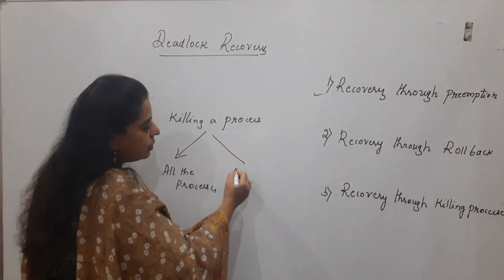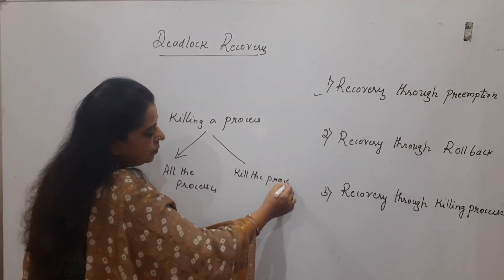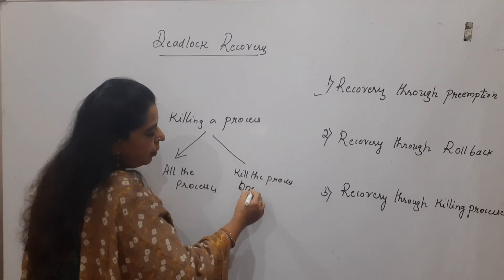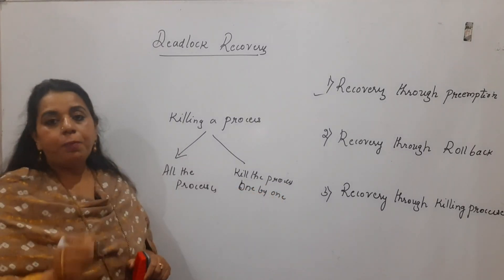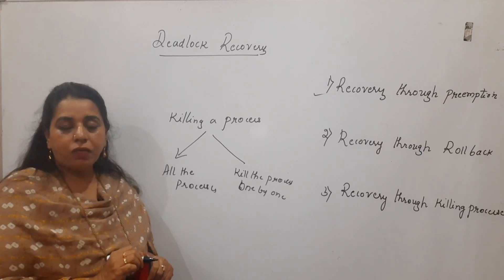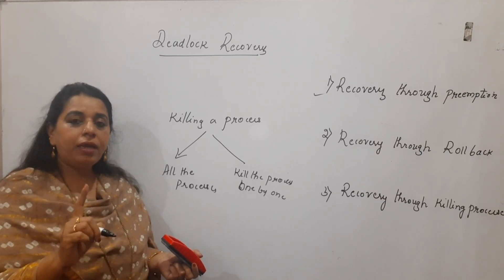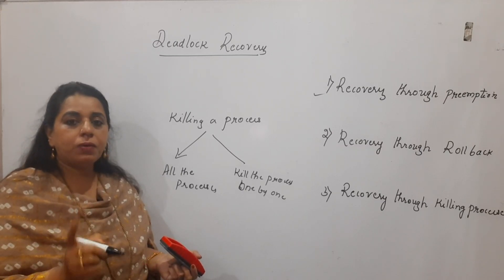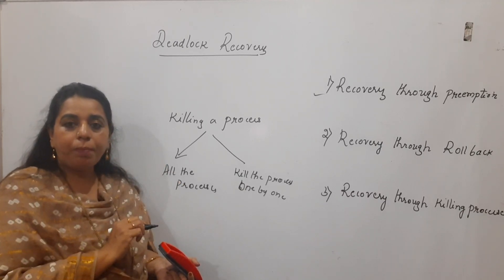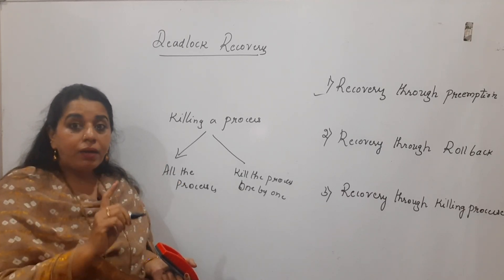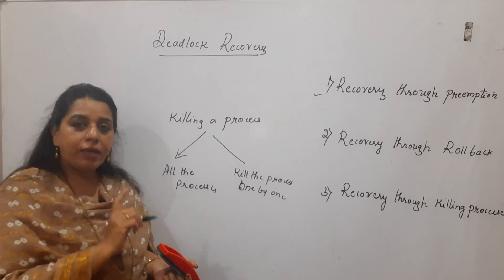Otherwise, you can kill processes one by one — terminate one process first, and then check whether the system becomes deadlock-free. Why kill all the processes unnecessarily? Just by killing one process, if you can make the system deadlock-free, then the other processes can still complete their execution. But you have to identify that process in a very intelligent manner.